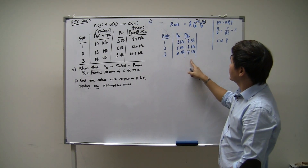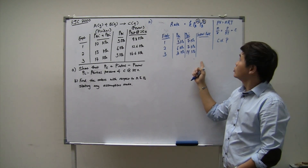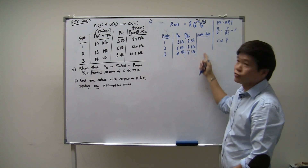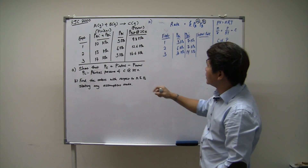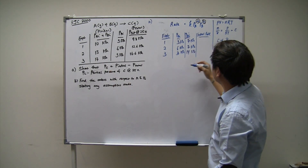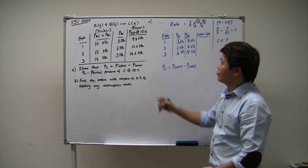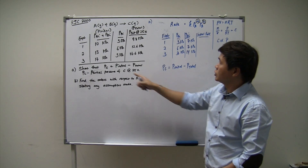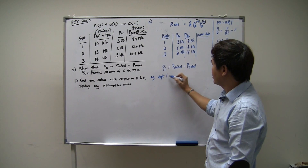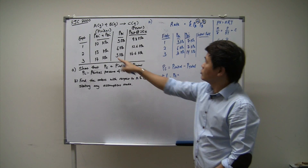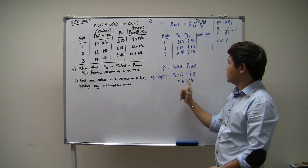The problem is that this question doesn't give you the initial rate. We normally use the initial rate method to solve for orders M and N, but the initial rates are not available. What we can do is use the table to find the initial rate. The partial pressure of C equals P_initial minus P_total, so for each experiment we can calculate PC. In experiment one, PC at 25 seconds is P_initial (10) minus P_total (9.8), which gives 0.2 kPa. This is the partial pressure of C at the 25th second.